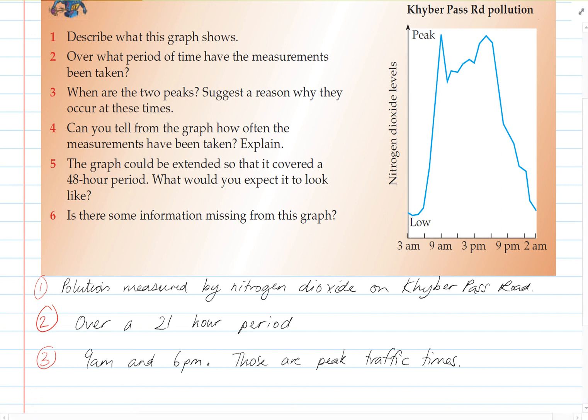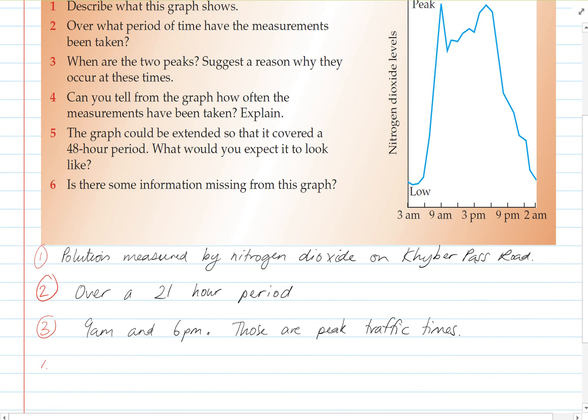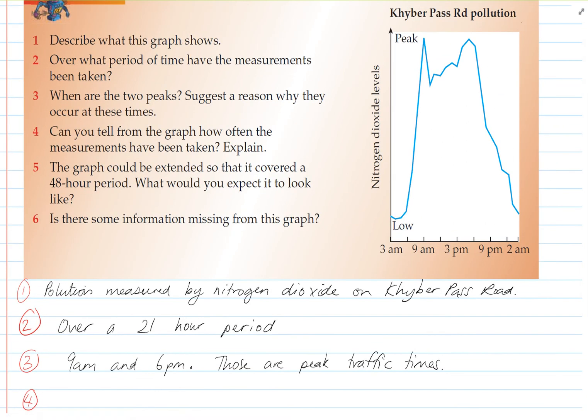Okay, question 4 is saying, can you tell from the graph how often the measurements have been taken? And so because this graph is a little bit kind of pointy, we can see that like there was a measurement here, and then another measurement here, and another measurement here.